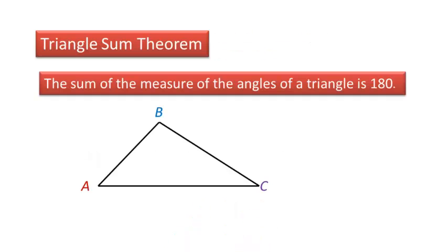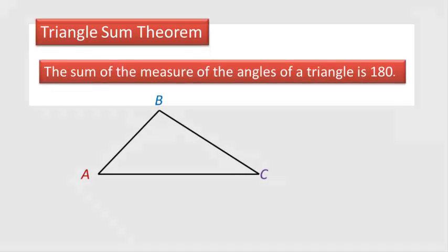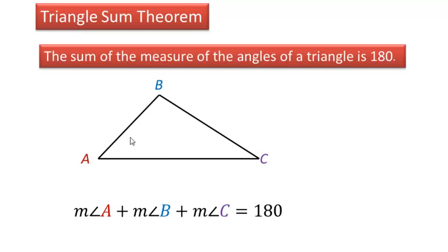We're going to start with the triangle sum theorem, and it says that the sum of the measure of the angles of a triangle is always 180 degrees. If we were to take all three of these angles here, a, b, and c, they would add up to 180 degrees.